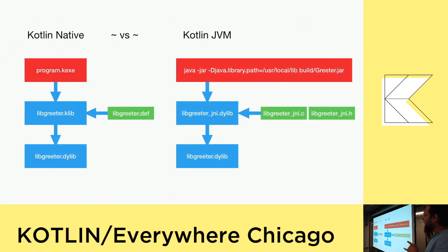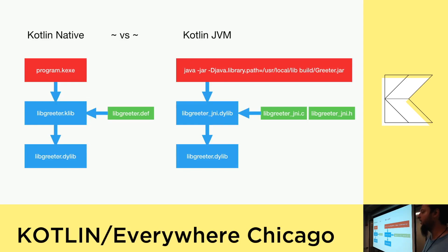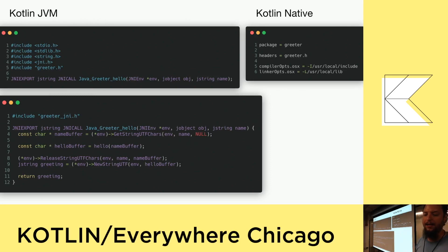Going back to the differences between Kotlin native and Kotlin JVM: we basically have our executables we're trying to get to. On the Kotlin native side, we call libgreeter.klib, which gets generated from the def file via cinterop, which then calls our shared library. On the JVM side, you have a few extra steps — you run that large java -jar command, and you have the libgreeter_JNI layer, which then calls the shared library. So you have two shared libraries in the case of JNI versus just one for native. My recommendation is if you're doing C interop, go with Kotlin native if you can — it's a lot easier.